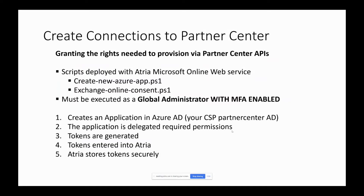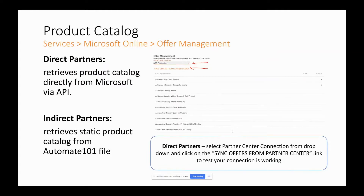The scripts essentially create an application and give it the permissions that you need. Then they generate some secret tokens. You enter those into Atria, Atria stores those tokens, and from that point on Atria can talk to Partner Center on your behalf. Once you've created a connection, one of the things you can do to check it's working is retrieve the product catalog via the Partner Center API. For direct partners, we retrieve that in real time from Microsoft. For indirect partners, unfortunately we don't have that capability, so we retrieve a static product catalog from a file shipped with the product.